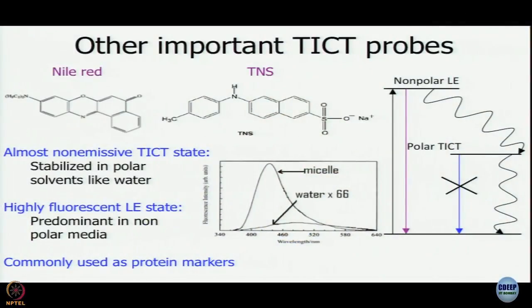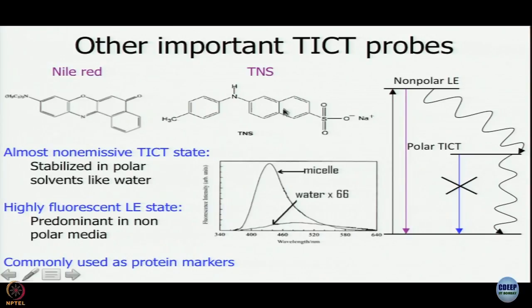TICT in DMABN — DMABN is the champion molecule of TICT. The term 'champion,' used especially in the heydays of material science where the best-performing device is called the champion device, applies well here. But DMABN is not the only prominent TICT molecule. Two other champion classes are Nylred and TNS or ANS — T for toluidinyl, A for anilino.